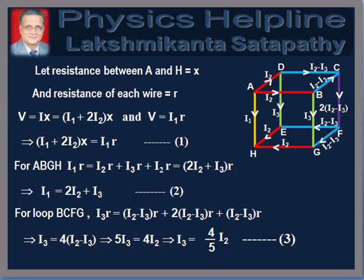We need a third equation, preferably involving I2 and I3 only. Therefore, we choose the loop BCFG which gives I3R is equal to (I2 minus I3) into R plus 2 into (I2 minus I3) into R plus (I2 minus I3) into R. This implies 5I3 is equal to 4I2, or I3 is equal to (4/5) into I2. We mark this as equation 3.